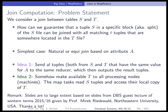The previous queries did not contain any join, and this is exactly what we want to investigate now — how to compute joins in MapReduce. We assume we have two tables S and T, and in order to join them we have to make sure that join partners that will be in the result find each other. In the simplest case we're looking at a natural join or an equi join, testing for equality of an attribute a. The first idea is to send all tuples from S and T that have the same value for attribute a to the same reducer, which then outputs the results.